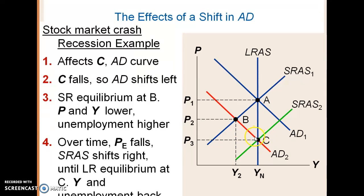The only difference is the overall price levels in the economy would be lower than before — originally they were at P1, now they'd be down to P3.